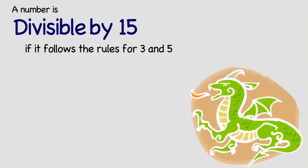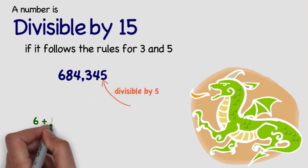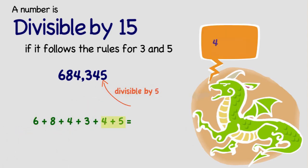Next up, we have 15, which is relatively simple. If it follows the rules for 3 and 5 it is divisible by 15. Our example number is 684,345. And since the last digit is a 5, we know that it is divisible by 5. Then if you add up the numbers, 4 plus 5 is 9, plus 3 is 12, plus 4 is 16, plus 8 is 24, plus 6 is 30. And 30 is divisible by 3.